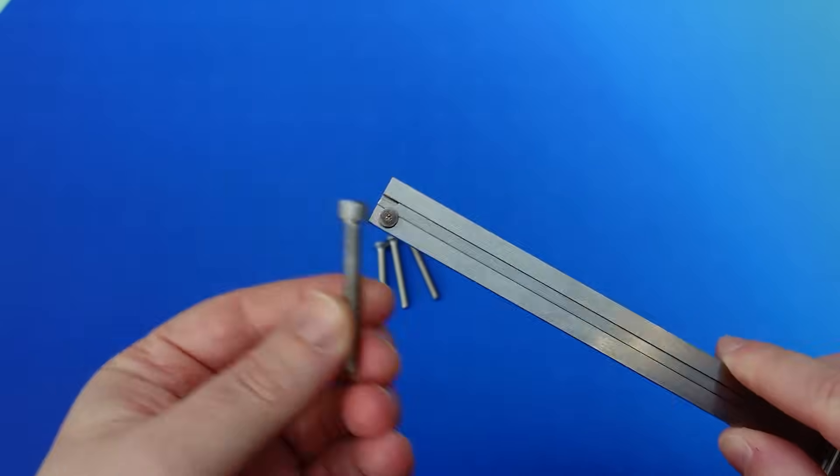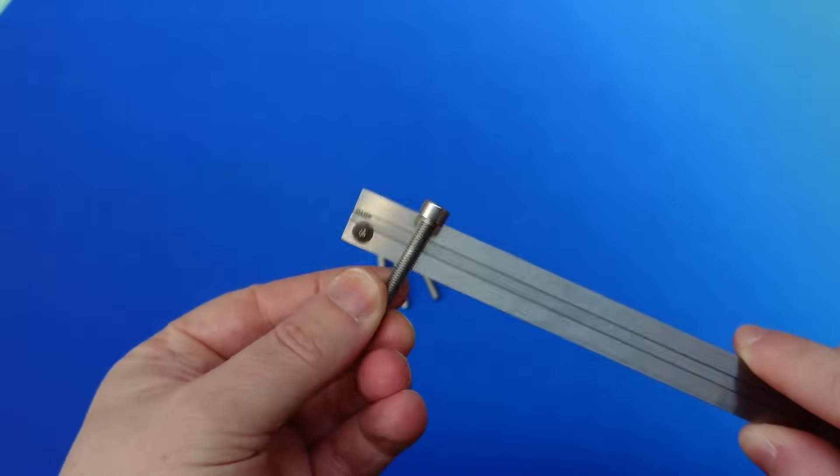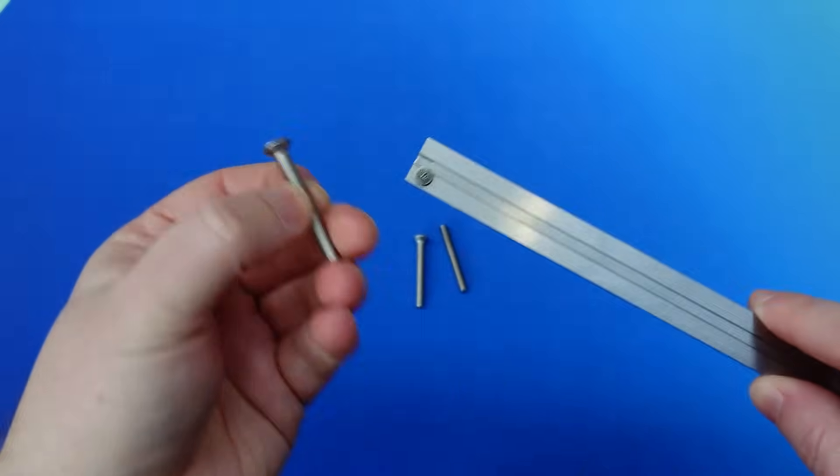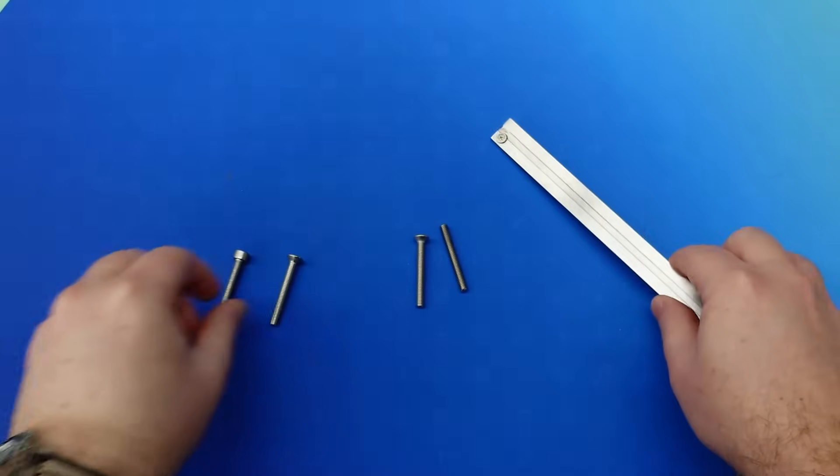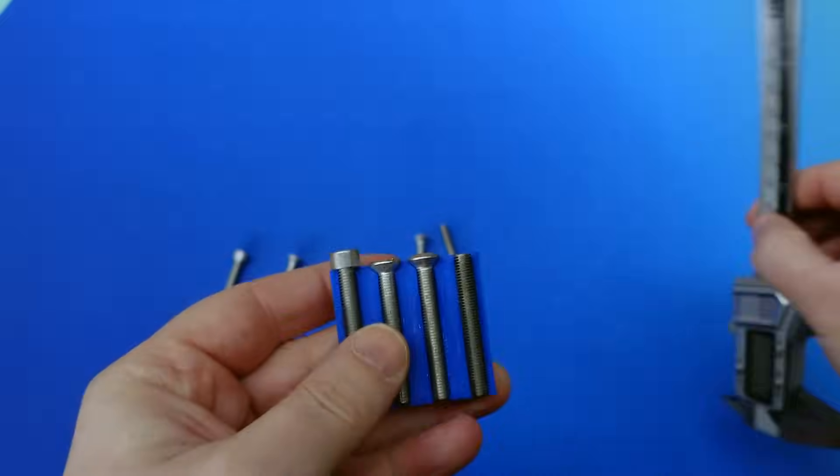So, a cap head would actually sit proud if you screwed it in as far as it would go, whereas a counter-sunk screw would sit flush. To make this even easier, let me grab this handy jig that I've made up to help illustrate what we're talking about using the same screws we see here on the workbench.